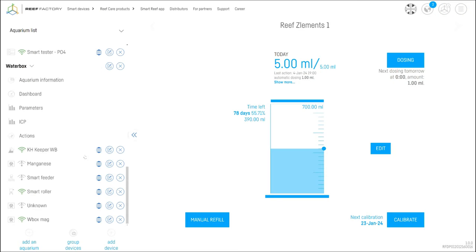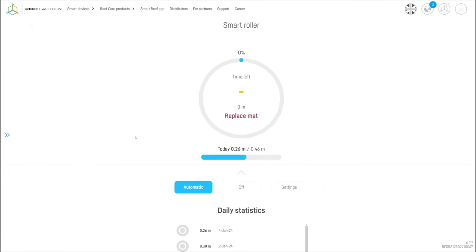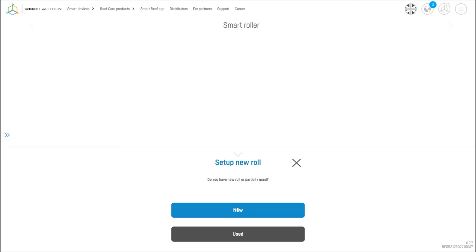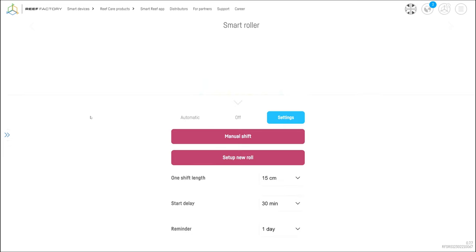Now actually there is one last step in that you need to tell the app that you've got a new roll. That's very easy. You just go into settings, press setup new roll, press new, and then it's done. Simple as that.